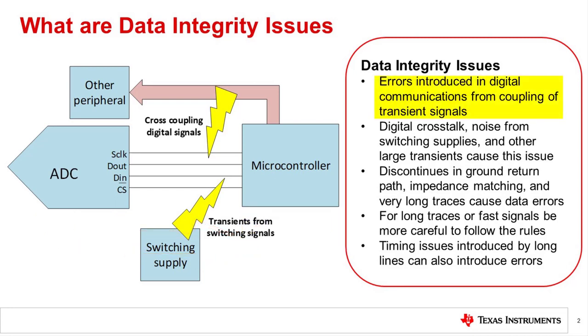For example, the ADC outputs a conversion result equal to 00110111 or 37 in hex, and the value received by the microcontroller is 10110111 or B7 in hex. In this case, the most significant bit is corrupted and the received data is incorrect. This kind of error may be introduced from the coupling of transient signals into the digital communication lines.